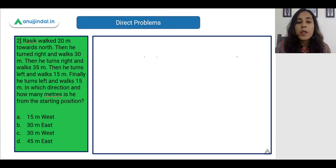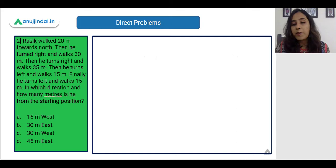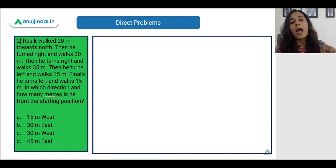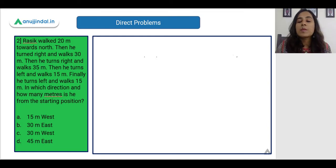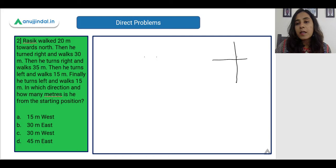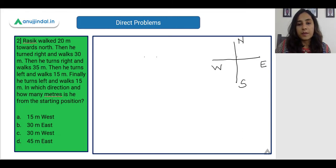Now let us see the second problem. Rasik walked 20 meters towards the North. Then he turned right and walked 30 meters. Then he turns right and walks 35 meters. Then he turns left and walks 15 meters. Finally he turns left and walks 15 meters. In which direction is he and how many meters from the starting point? So let us draw our diagram — first the compass. This is my North, South, East and West direction.